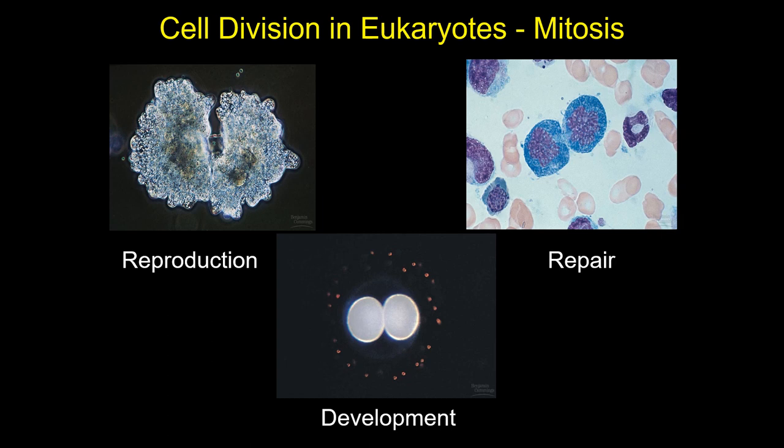Eukaryotes are more complicated. They have organelles, a nucleus, and that nucleus contains DNA. The DNA isn't in a big circle — it's in a bunch of linear pieces, and all of those have to be copied. Some single-celled eukaryotes only engage in mitosis to make copies of themselves. For example, an amoeba can split into two daughter cells that are identical. Amoeba can reproduce that way, but they can also have sex occasionally — we'll come back to why they do that.